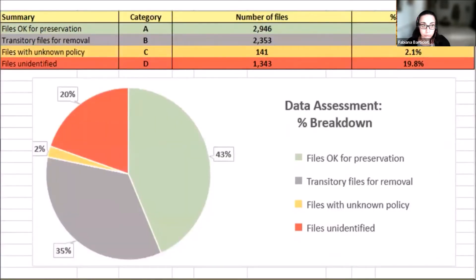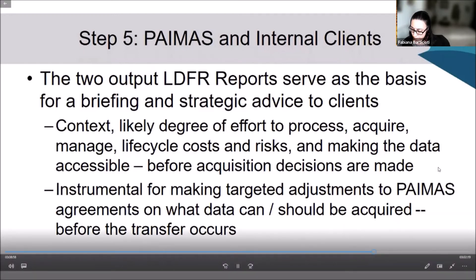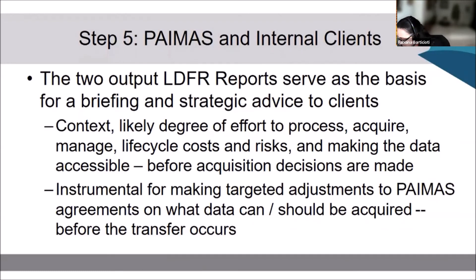This is a second version of the report which is condensed and is used for briefing the client. You can see there's a pie graph that breaks down at a glance exactly how that data conforms to the file format policy or is otherwise requiring elevated effort, which in turn speaks to a higher level of service for the digital preservation catalog, which in turn impacts capacity. These two output LDFR reports are used to brief and provide strategic advice to clients in terms of total cost of ownership and how much work will be involved in processing that dataset—all before acquisition decisions are made.